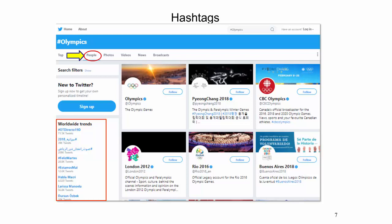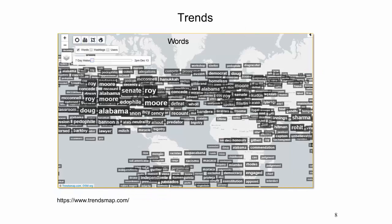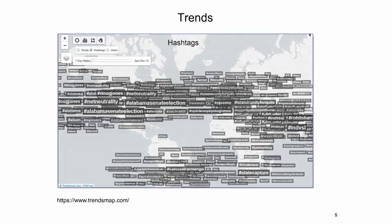A trending topic is a phrase or topic mentioned at a greater rate than others. It helps Twitter and their users to understand what is happening in the world and what people's opinions are about it. Some worldwide trends are shown to the left. Third-party websites generate sophisticated trend maps for different parts of the world and different time frames. This figure shows word trends in tweets over seven days, where larger terms indicate a more prominent trend. Another figure shows the hashtag trend map for the same time period. Typical topics include elections, scandals, wars, or natural disasters.